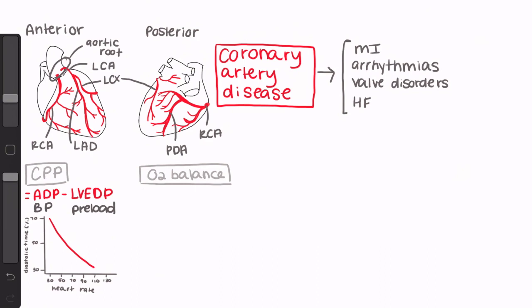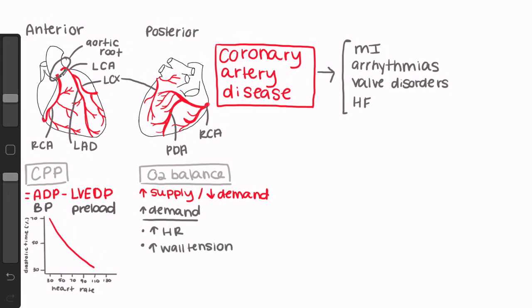Now let's focus on the balance between myocardial oxygen supply and demand. We see ischemia when the heart's oxygen demand is greater than its supply. Some things that increase the heart's demand for oxygen that we definitely want to avoid in these patients include increased heart rate, increased wall tension — which occurs in the presence of increased preload or increased afterload — and increased contractility. That last one is a balance; we don't want to completely depress the myocardium, but we also have to remember that the harder the heart has to work, the higher its oxygen demand will be.